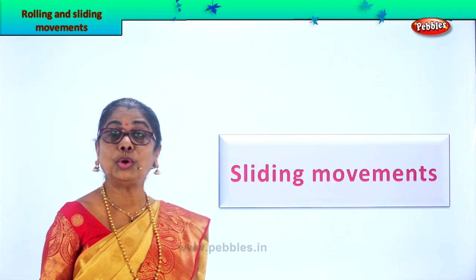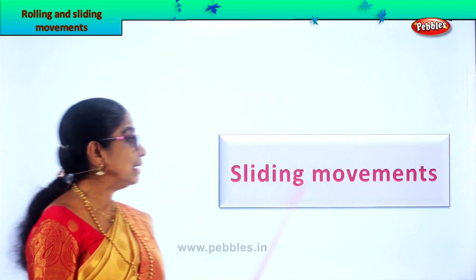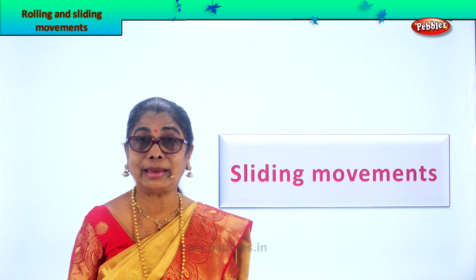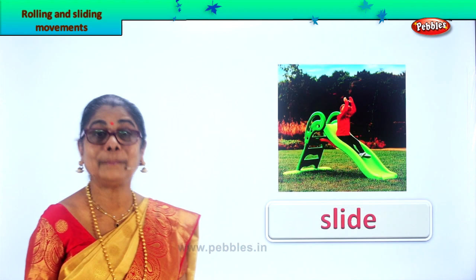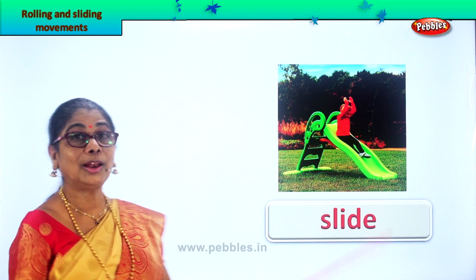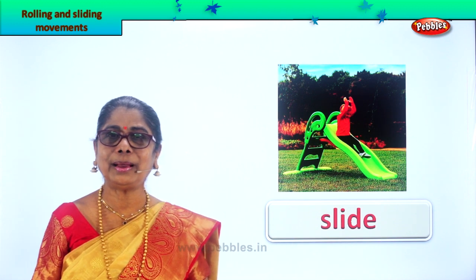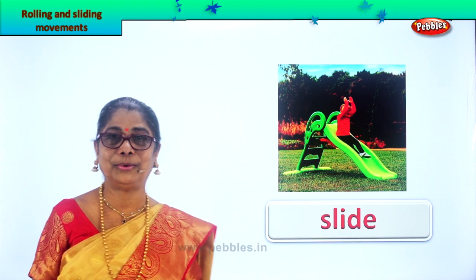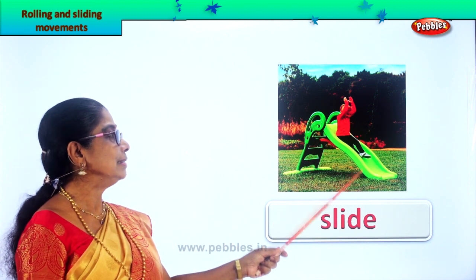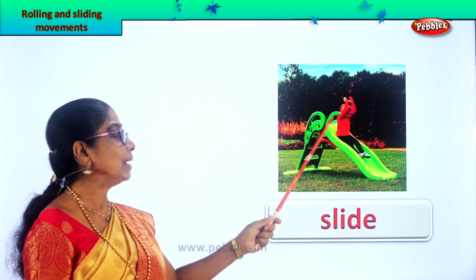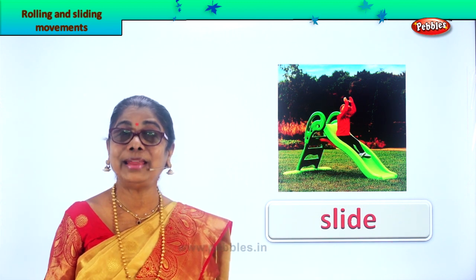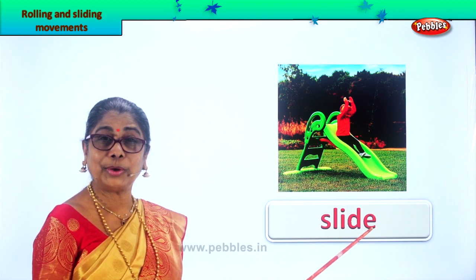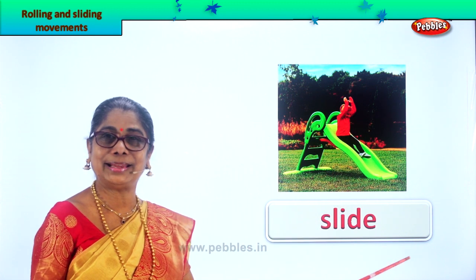Next, we are going to look at sliding. What can slide? Sliding movements of something we are going to look at. The first picture you see — what do you do in the park? Sit on the top and keep sliding down. A slanting slide is here, and you sit there. Your hands are up and you come reaching down, and you feel very happy. So what can slide? You can slide. Good.